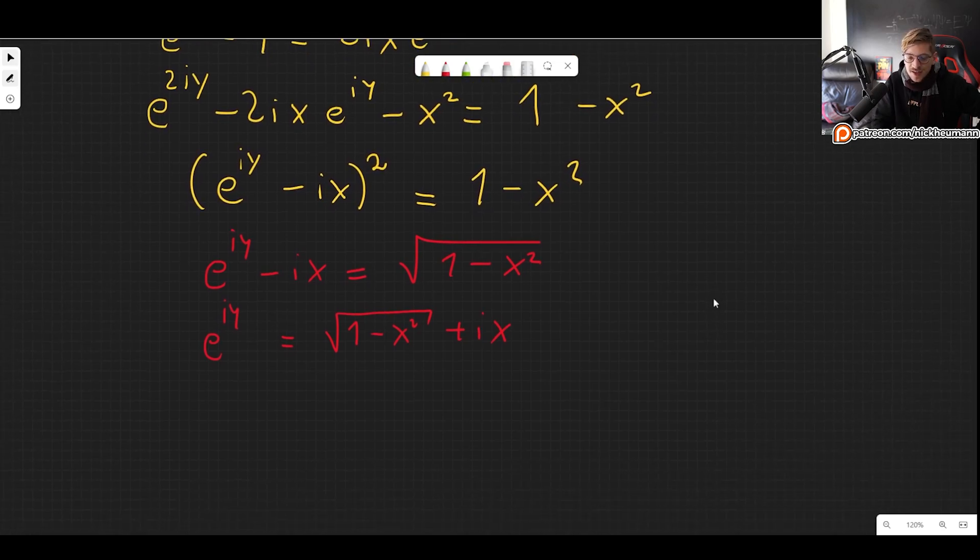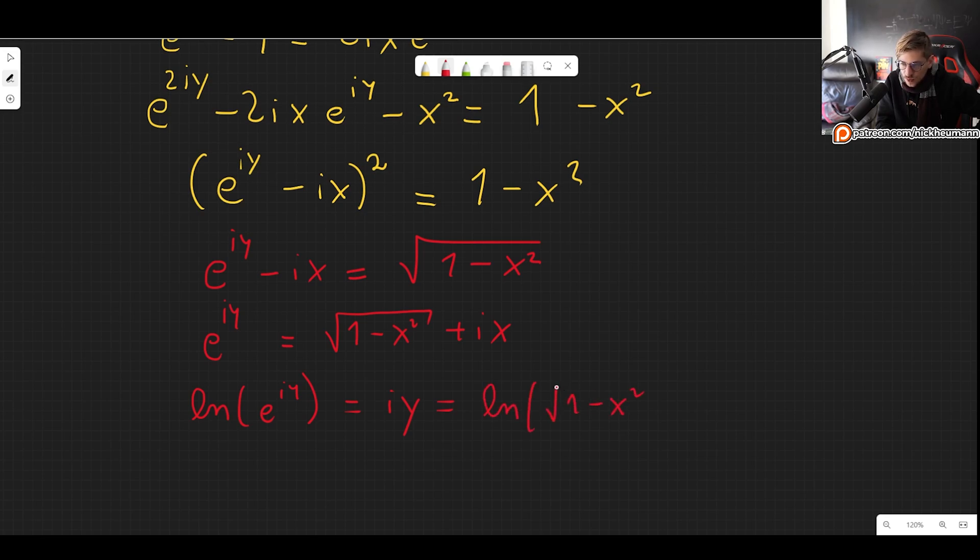And now we can take the natural log. So we take the natural log of e to the iy, which is simply iy. And on the right side, we get the natural log of the square root of 1 minus x squared plus ix.